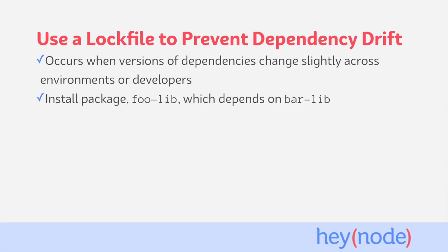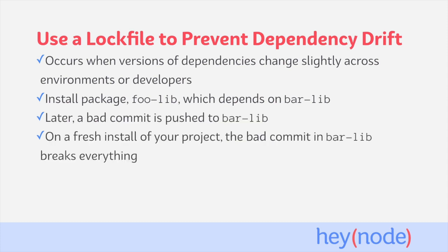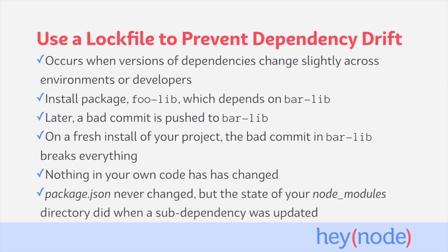Let's say we install a package to our project — we'll call it foo-lib — and it depends on a package called bar-lib. You use foo-lib directly in your app and everything is working fine. But at some point later on, an update is published to bar-lib which introduces a bug. Then, on a fresh install of your project, the bug in bar-lib completely breaks your project. From your perspective, nothing in your code has changed at all. Your package.json never changed, and you're not relying on bar-lib directly as a dependency, but the state of your node_modules directory changed when foo-lib's dependency, bar-lib, was updated to the new version.